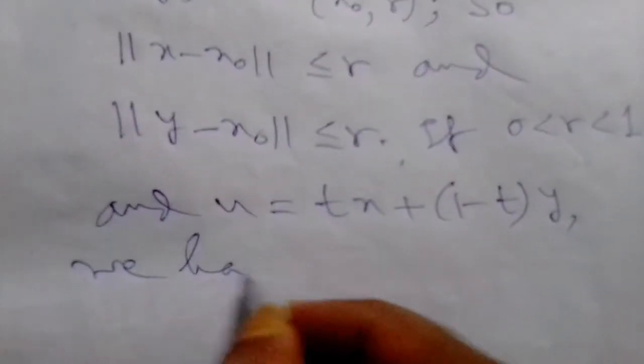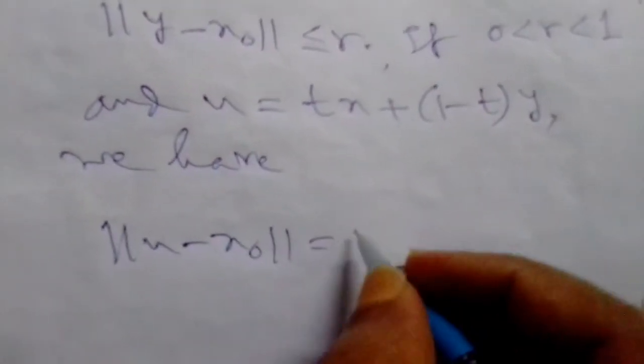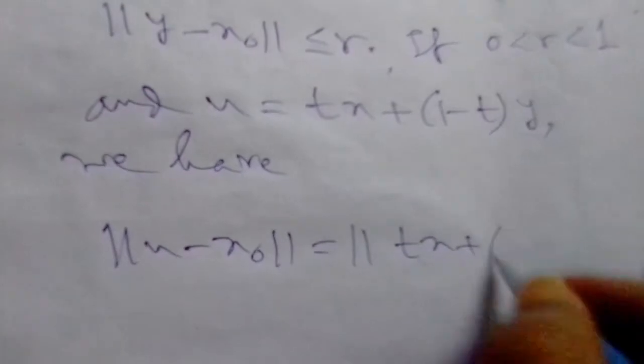Then we have norm ||u - x₀||, and this u will be replaced as tx + (1-t)y - x₀, and now it is clear that norm of t(x - x₀) + (1-t)(y - x₀).